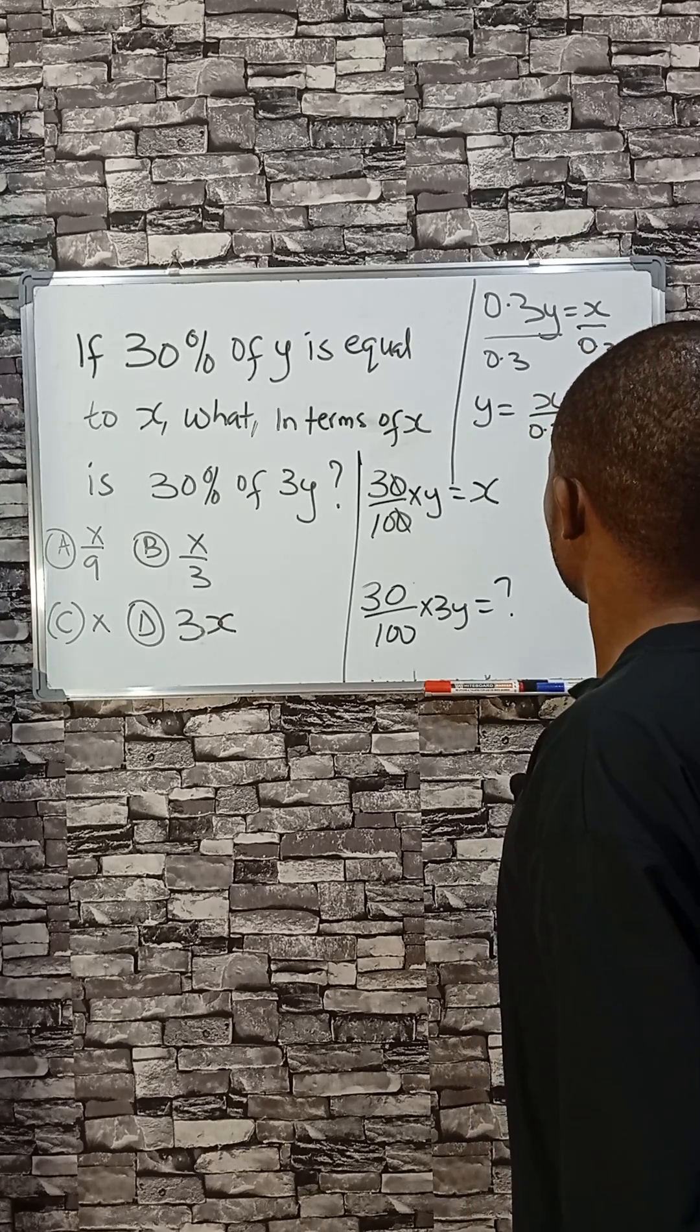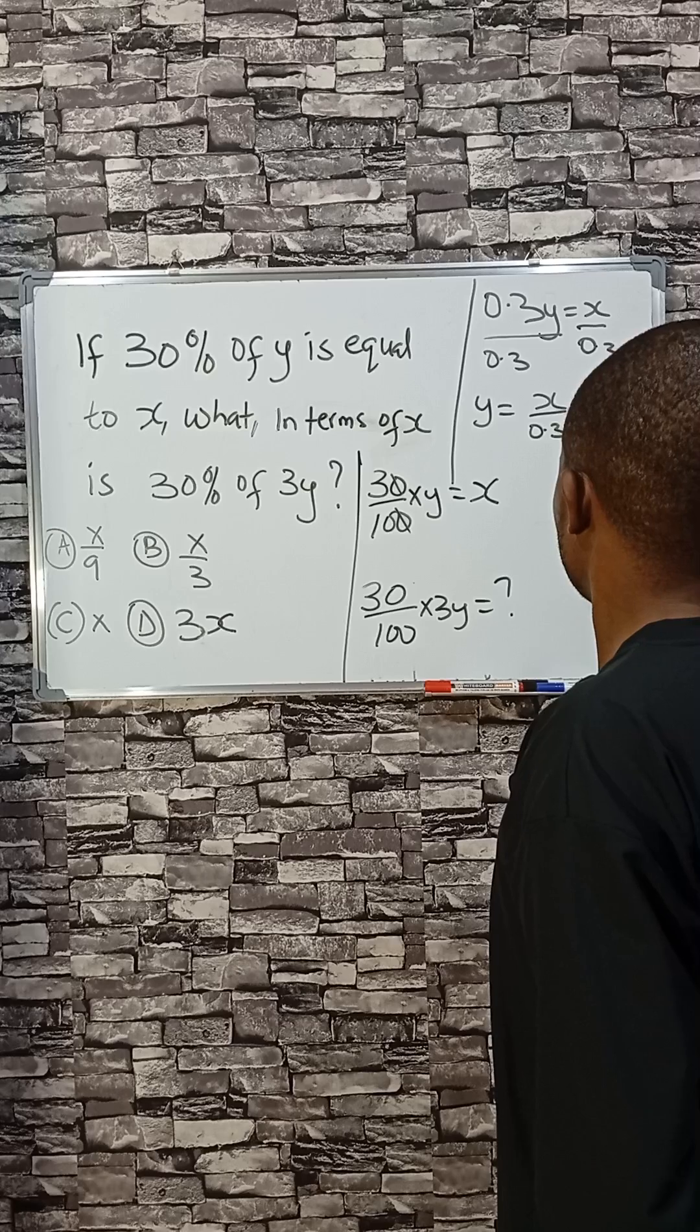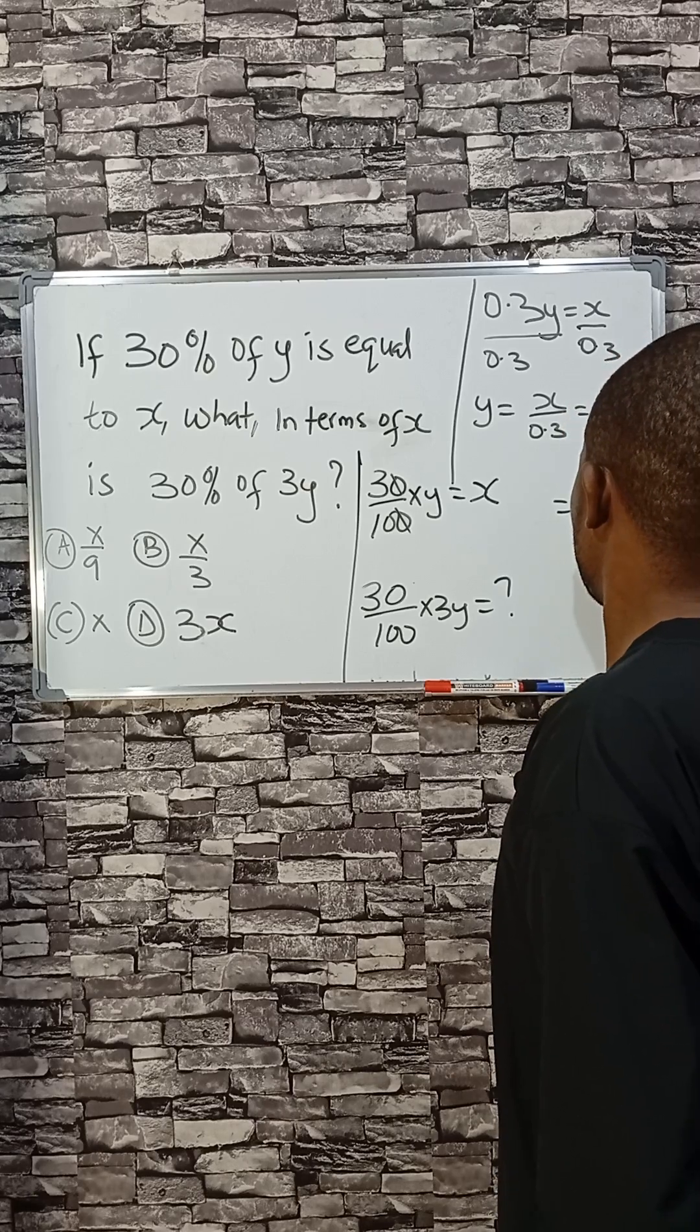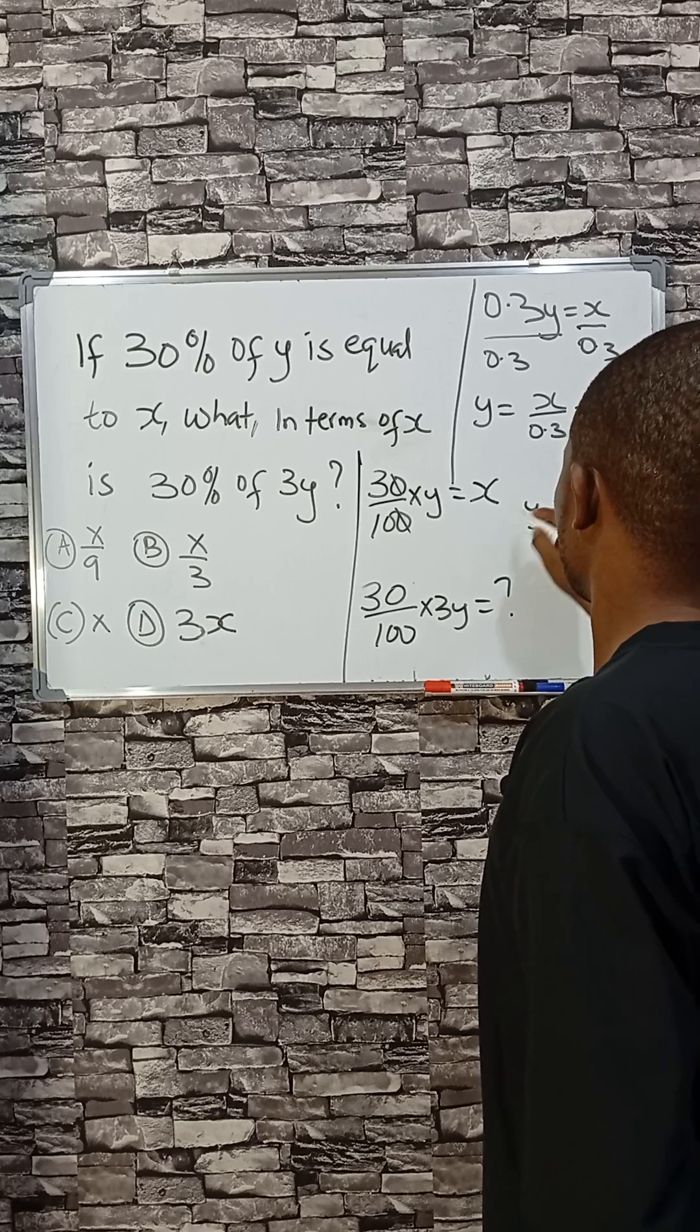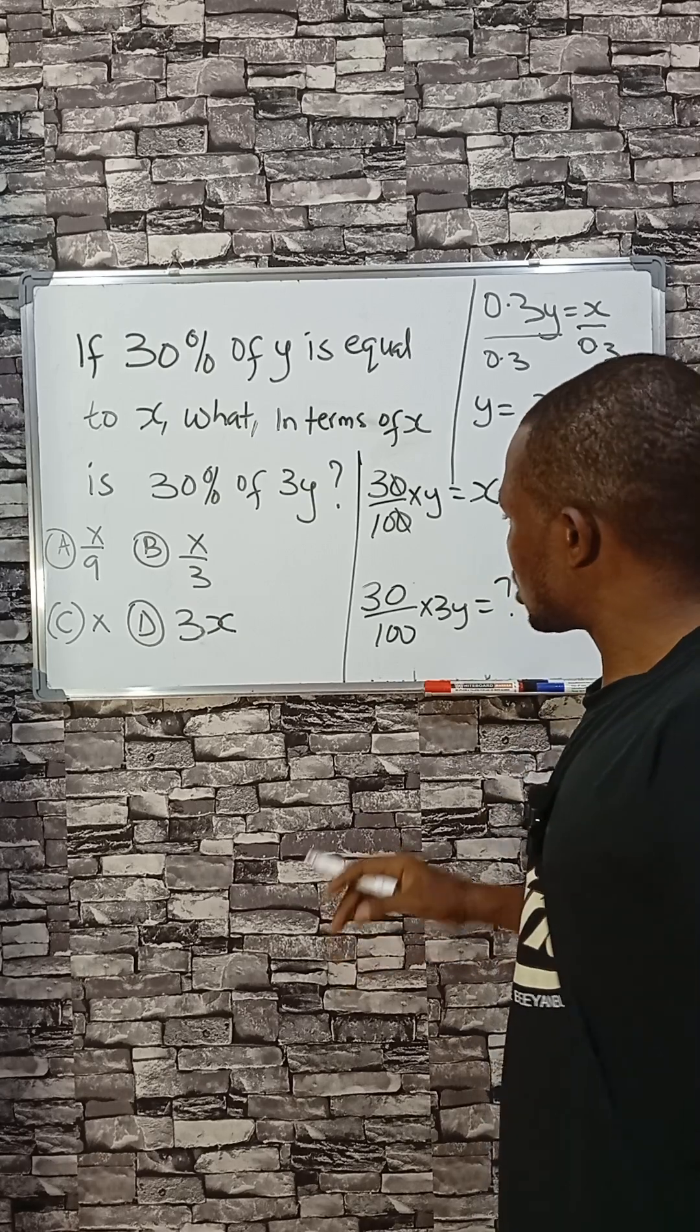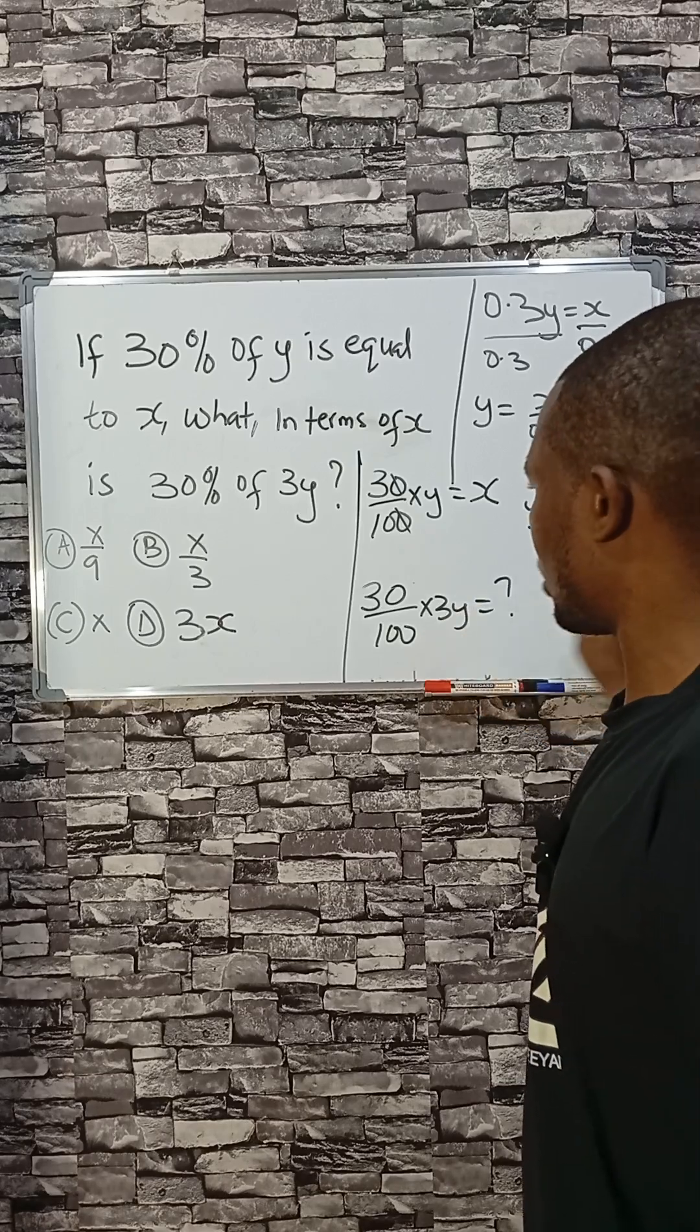And that is like saying x divided by 3 over 10, which is 10x divided by 3. This is equal to y. So we now substitute 10x divided by 3 here to find the final answer.